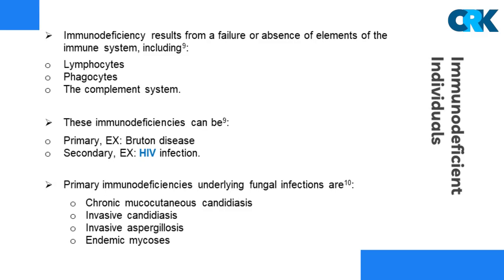Immunodeficiency results from a failure or absence of elements of the immune system, including lymphocytes, phagocytes, and the complement system. These immunodeficiencies can be either primary, such as Bruton disease, or secondary, such as immunodeficiency due to human immunodeficiency virus infection. Primary immunodeficiencies underlying fungal infections are chronic mucocutaneous candidiasis, invasive candidiasis, invasive aspergillosis, and endemic mycoses.